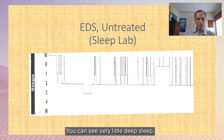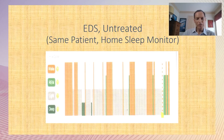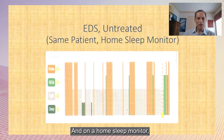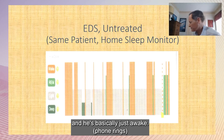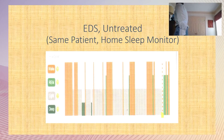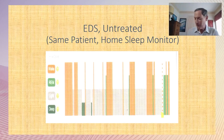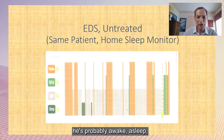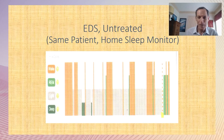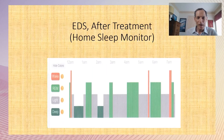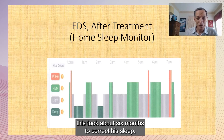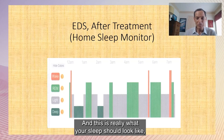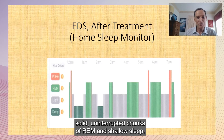Here's another patient with very little deep sleep and lots of awakenings. On a home sleep monitor the orange lines are awake, and he's basically just awake most of the night. It took about six months to correct his sleep. This is really what your sleep should look like: two nice big chunks of deep sleep, and solid uninterrupted chunks of REM and shallow sleep.